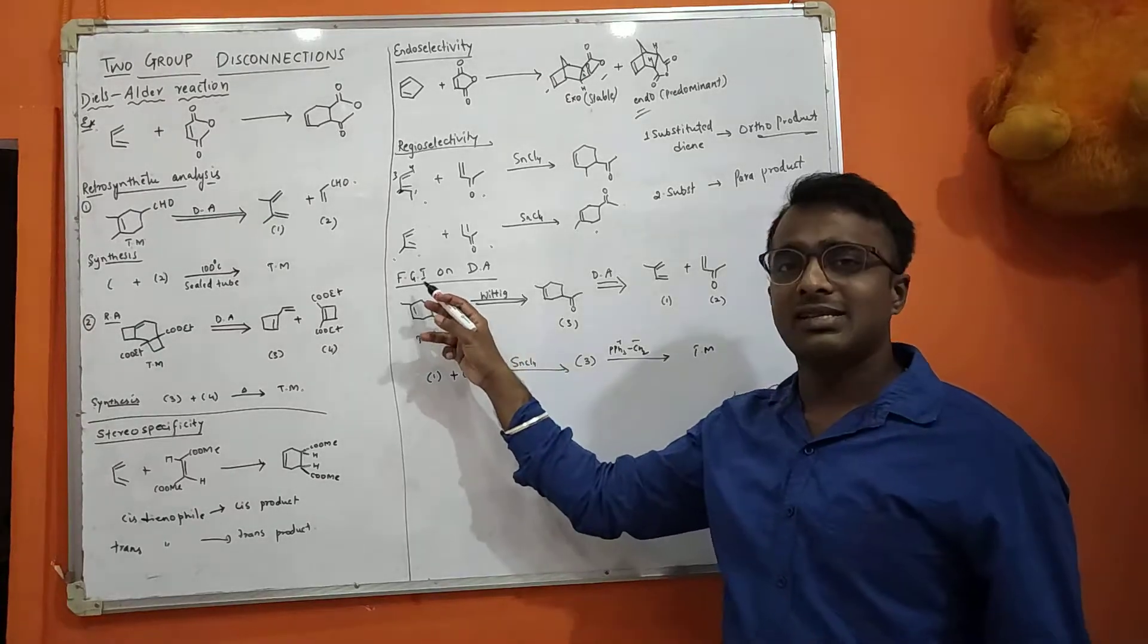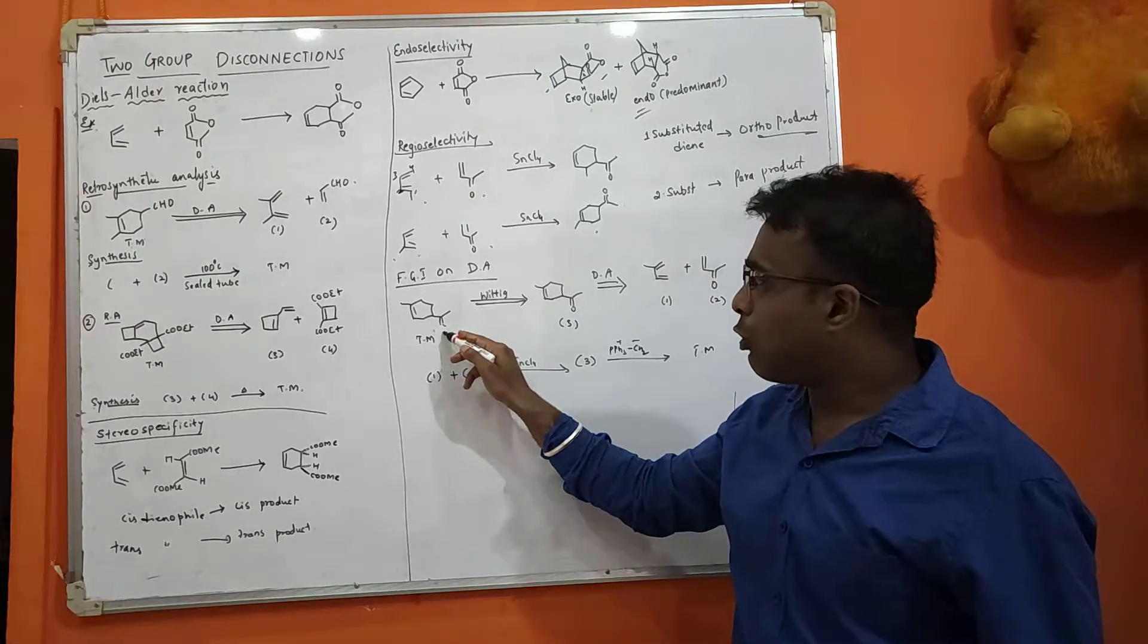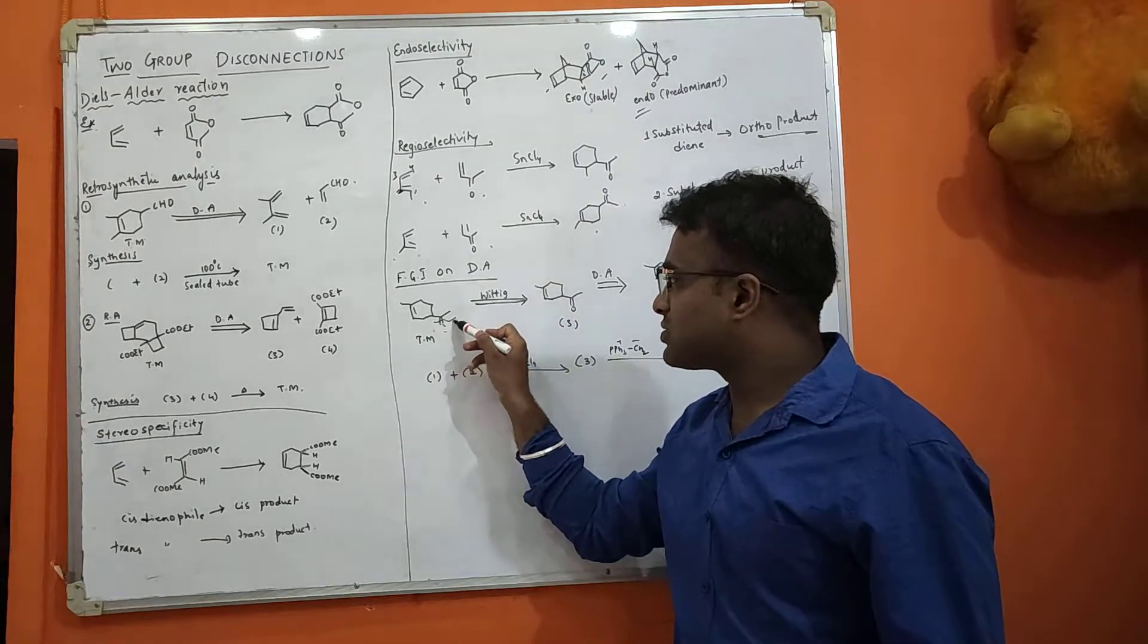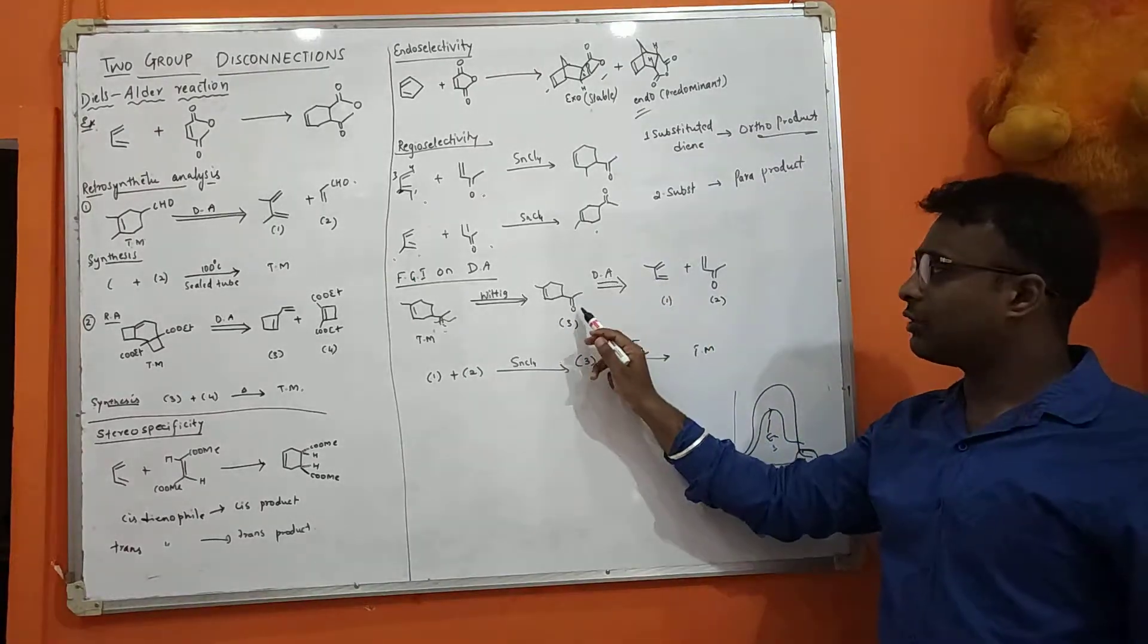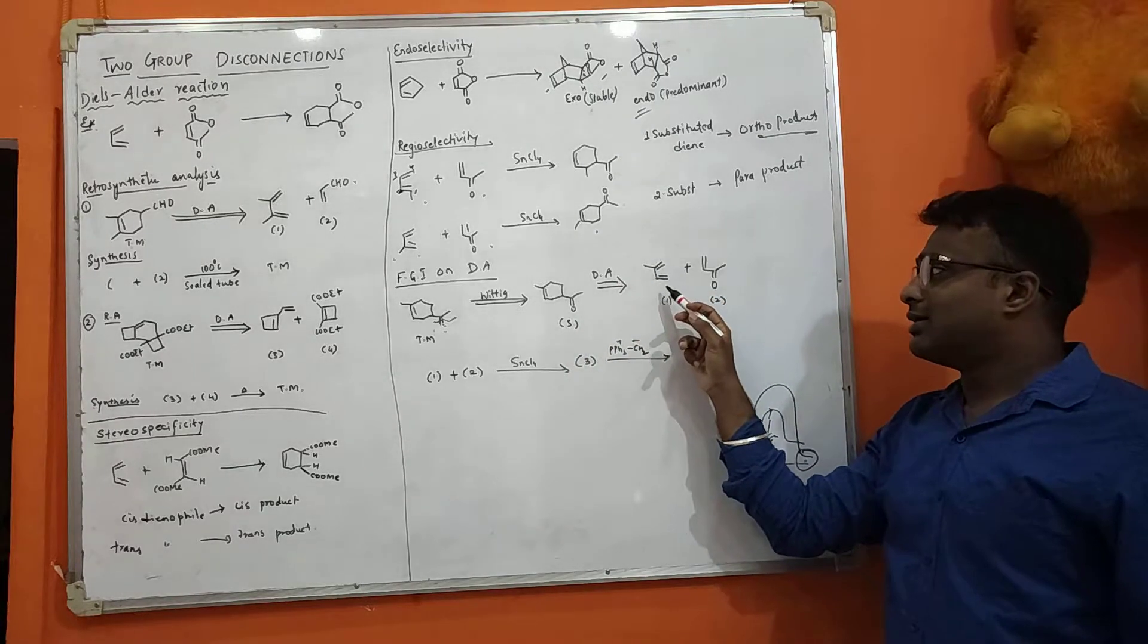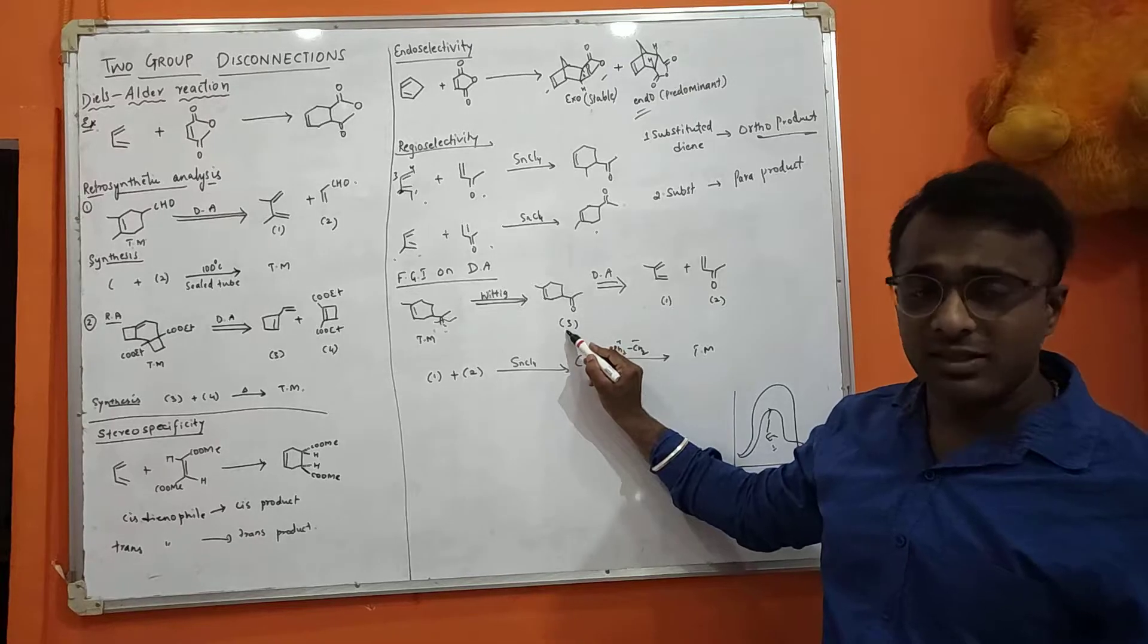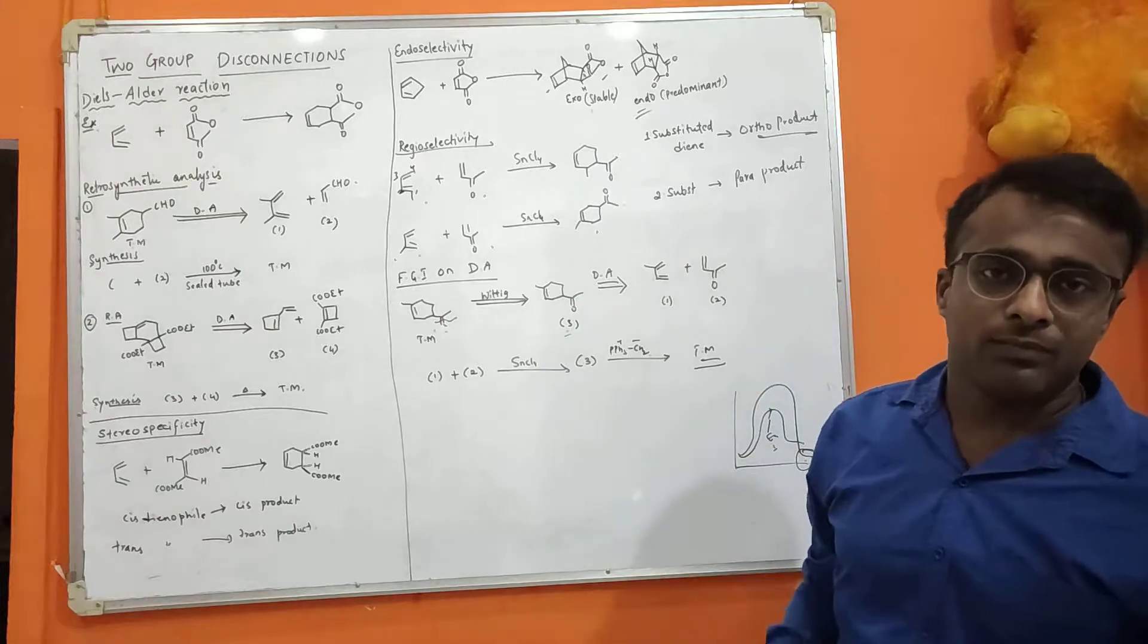A very simple example is the Diels-Alder reaction. This is an alkene form. How to convert this into C=O? We need to convert it by Wittig reaction. This will be converted into C=O. Now further you apply Diels-Alder reaction. This is an electron withdrawing group, so you can easily apply Diels-Alder reaction and get the synthons. Put synthetic equivalence, add SnCl4, you will get this product. Then you use Wittig reaction and you will get the target molecule. Thank you.